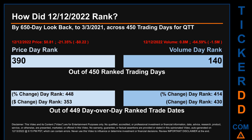Hello, my name is Magnus. How did the 12th of December 2022 rank for QTT? By a 650 calendar day lookback to the 3rd of March 2021, across 450 trading days, the 12th of December 2022 price ranked 390 while its volume ranked 140. Each of the 450 trading days were ranked amongst themselves by highest end-of-day price and volume, with a rank of 1 being the highest and 450 being the lowest ranked day. The price's day-over-day percentage change, dropping minus 21.35% on the 12th of December 2022, had a day rank of 448, while its dollar difference of minus $0.22 had a rank of 353. Volume's percentage change and difference were ranked respectively at 414 and 430.